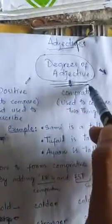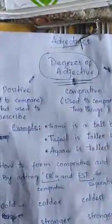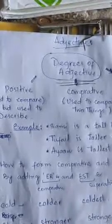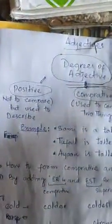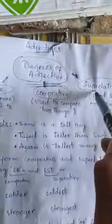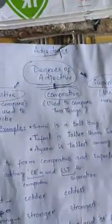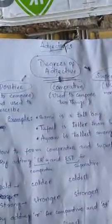Now, today our topic is degrees of adjective. What are the different degrees of adjective? There are three degrees of adjective. We can also call them the degrees of comparison. The first degree is positive degree, the second degree is comparative degree, and the third degree is superlative degree. Why do we need these degrees of adjective and how do we use them? Let's have a look.